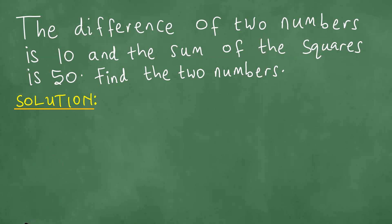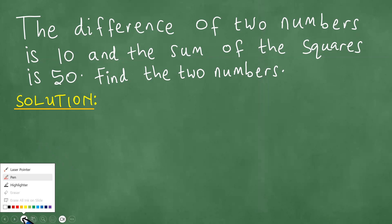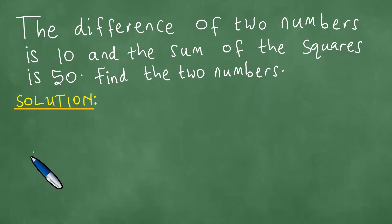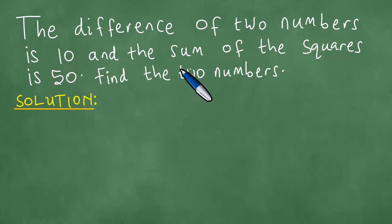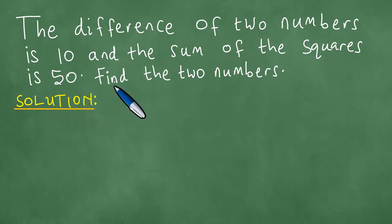We noted a couple of things here. We take a look at this question and we realise that we need to solve this word problem. The difference of two numbers is 10 and the sum of the squares is 50. Find the numbers.